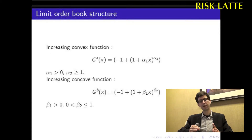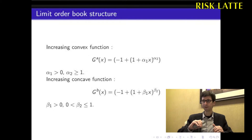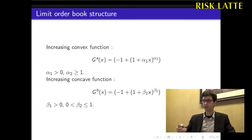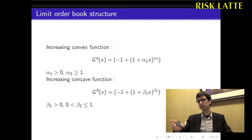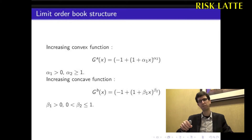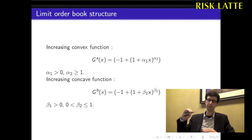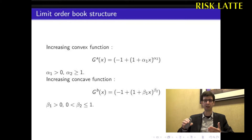To model the ask part and bid part structure of the limit order book, we define two deterministic functions. The first is an increasing convex function called GA. The parameter alpha_1 must be greater than 0 and alpha_2 must be greater than 1. Alpha_2 is responsible for the convex shape of the function — think of a square function as an example.